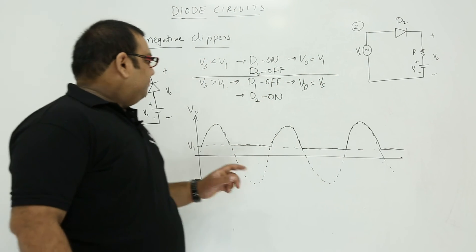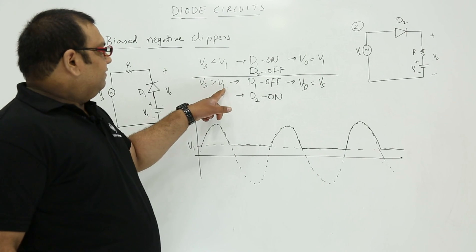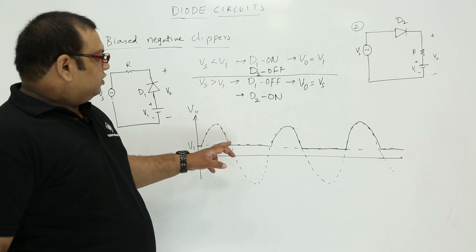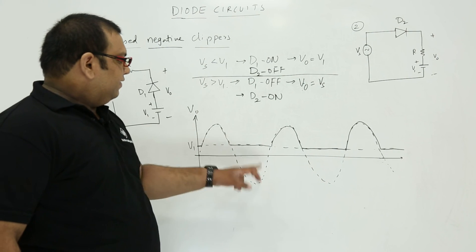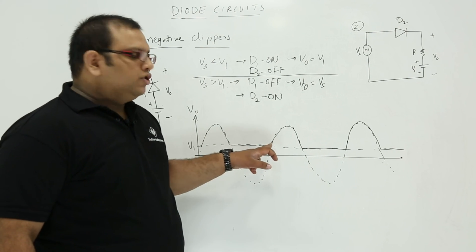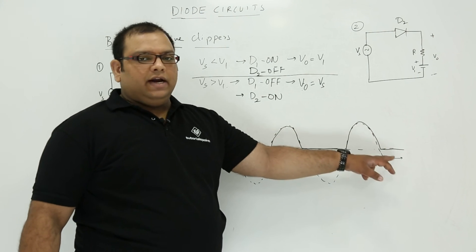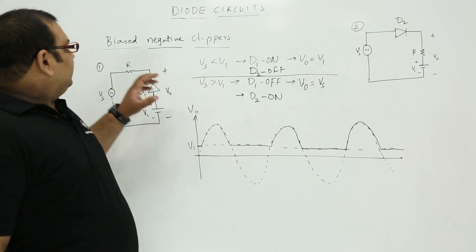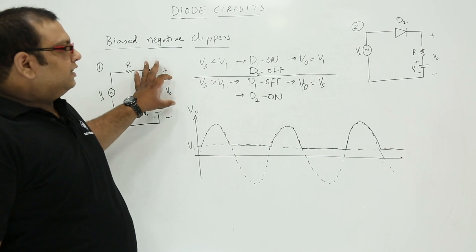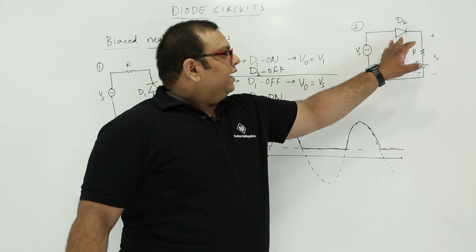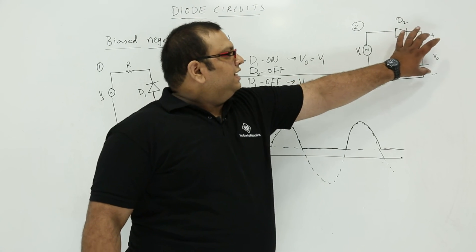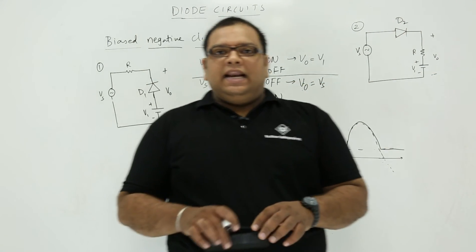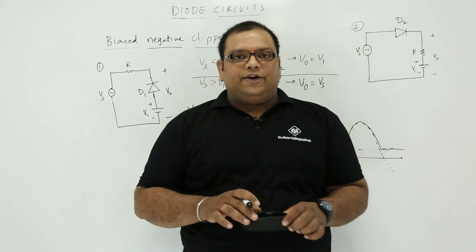Here also the same waveform: when Vs is greater than V1 it follows the input; when Vs is less than V1, output is equal to V1 only. So the same output waveform you will get. Both circuits will give the same output. The difference is: in the first circuit, the output is taken across the diode; in the second circuit, the diode is in series and the output is taken that way. This is the biased negative clipper circuit.